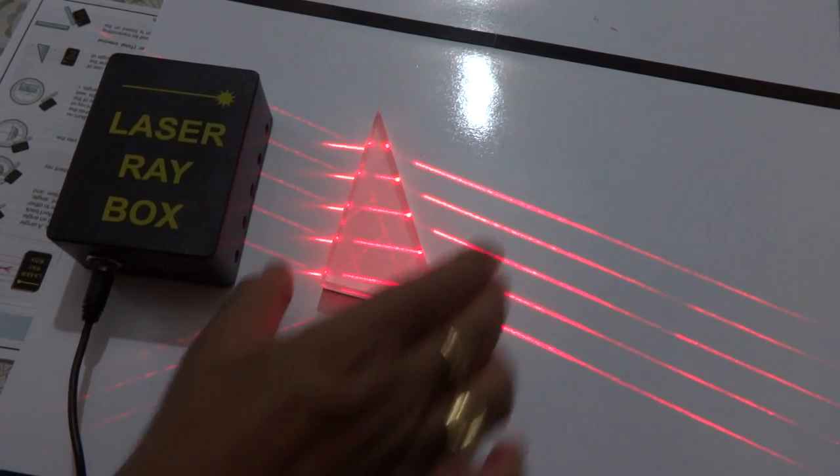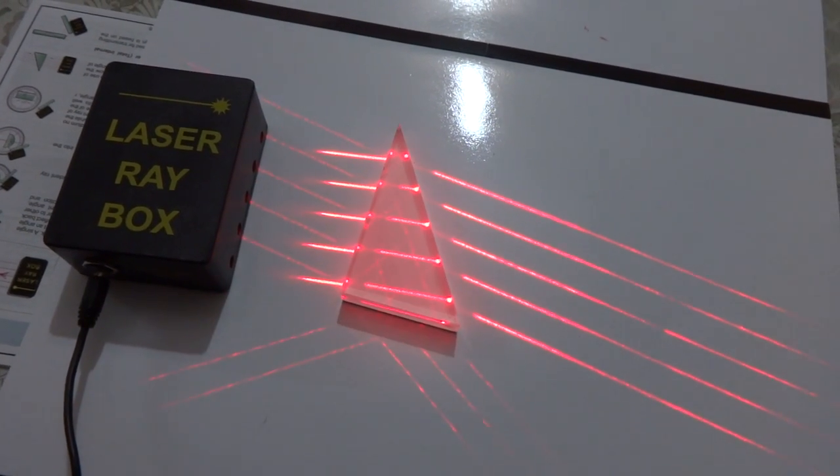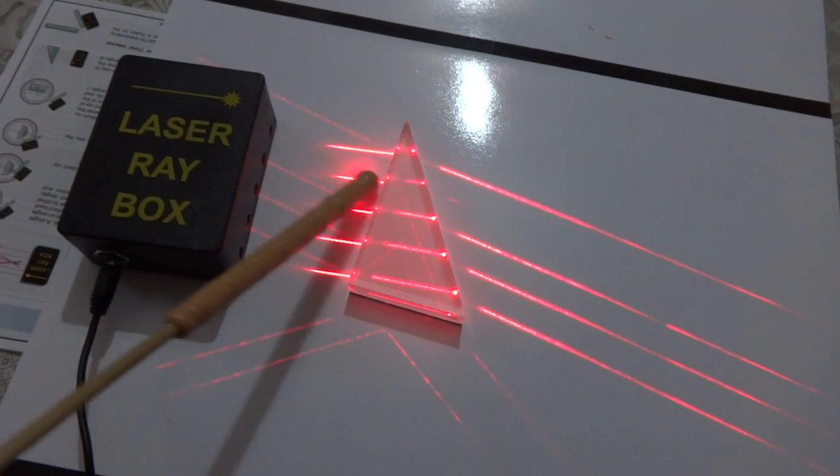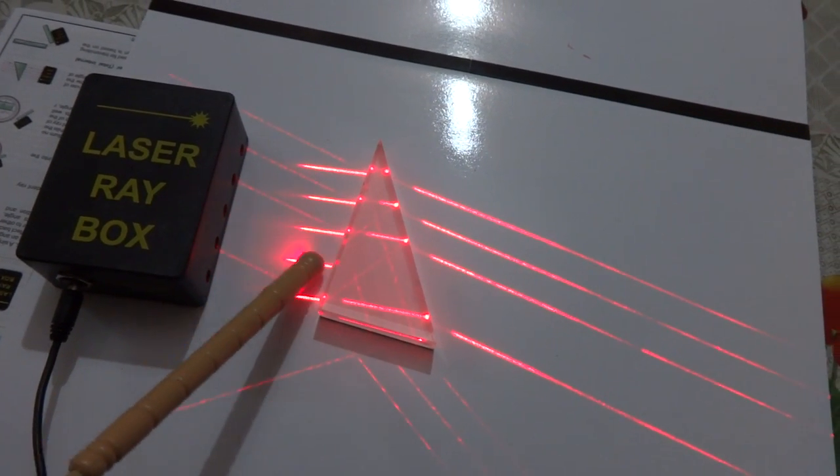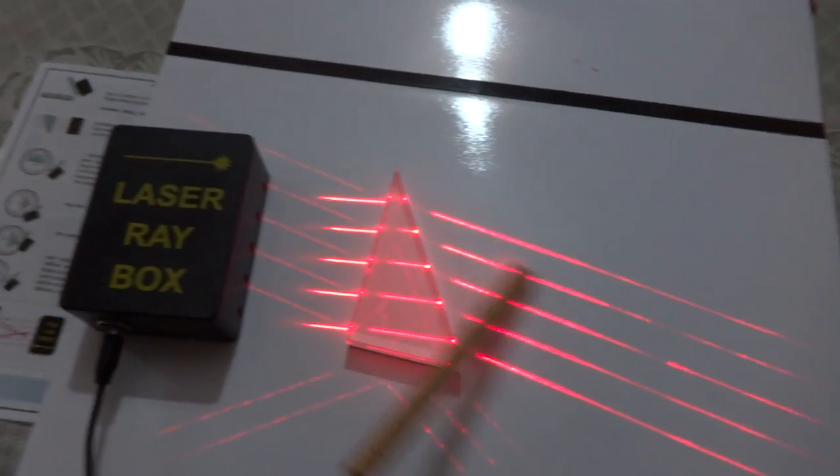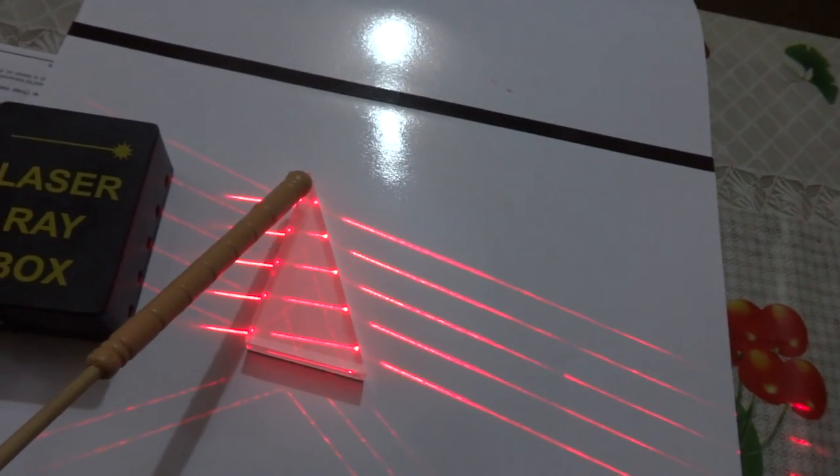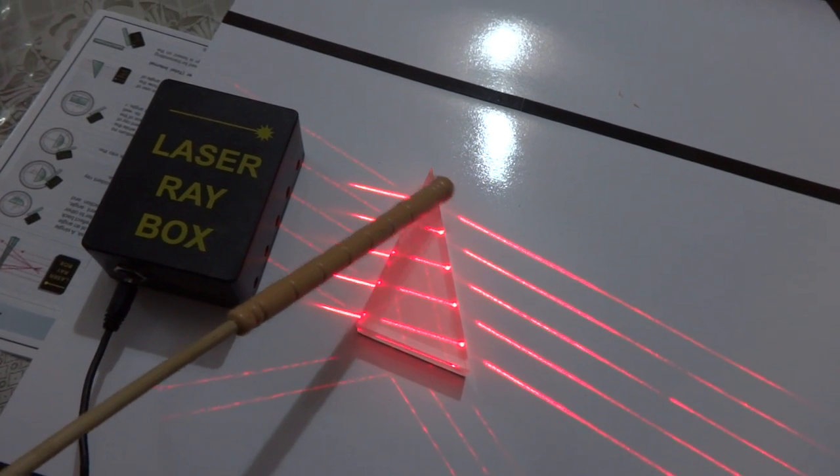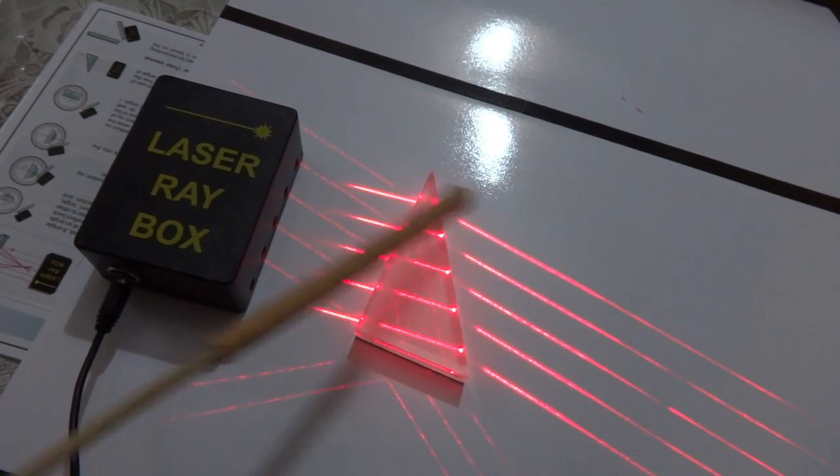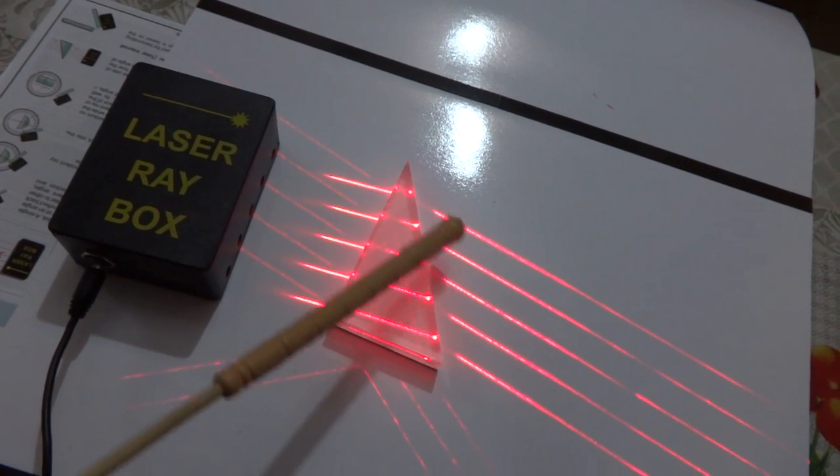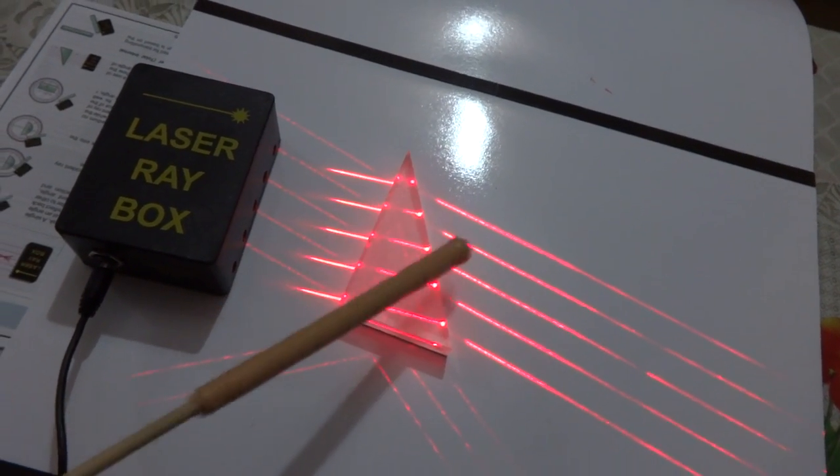Now, the refraction through the prism. So, you can see that these are the incident rays and these are emerging rays. So, the incident rays, suppose if there is no refraction, then the ray would have gone straight. But, just because of refraction, it has been bent and then this is known as deviation.